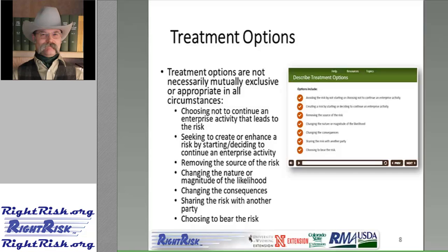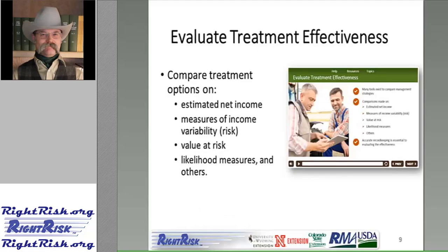Treatment options are not necessarily mutually exclusive and may not be appropriate in all circumstances. We should keep in mind that implementing a management strategy may itself introduce certain kinds of risk, so we need to be careful about how options interact with one another during implementation. Attempts should be made to monitor the treatment plan as it is implemented, and where the threat level warrants, assess the level of residual risk — the risk that remains after treatment has been applied. Few options exist to help managers evaluate alternative treatments where no records are kept or no data is collected on the effects of treatment.